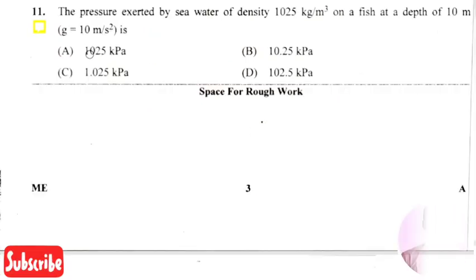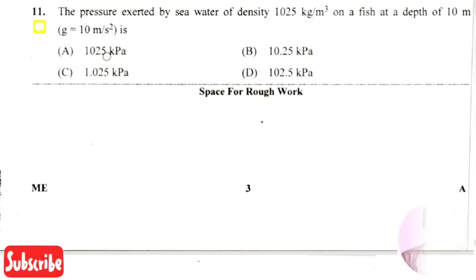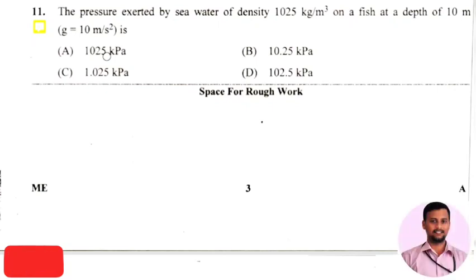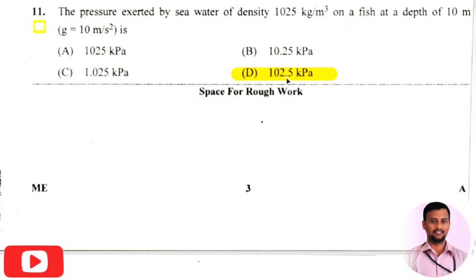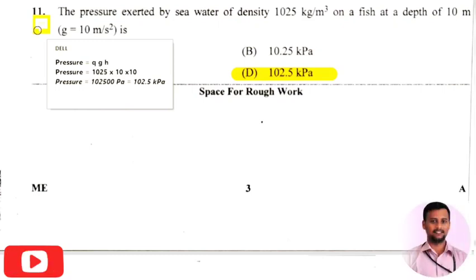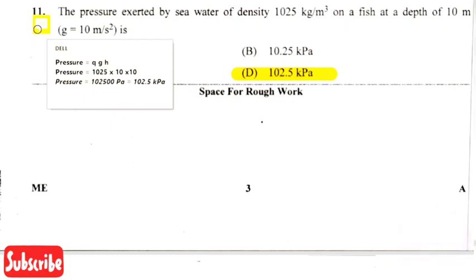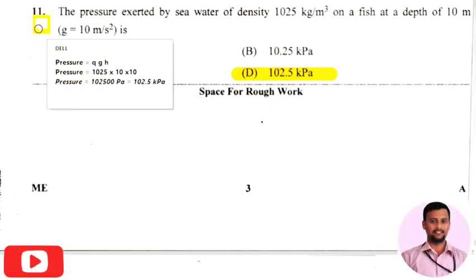The next question: the pressure exerted by sea water of density 1025 kg/m³ on a fish at a depth of 10 meters (assume g = 10 m/s²) — the right answer is option 4, that is 102.5 kilopascal. Pressure is given by P = ρgh, where ρ is the density, g is gravitational constant, and h is the depth. Multiplying all three values: 1025 × 10 × 10 = 102,500 Pa = 102.5 kPa.